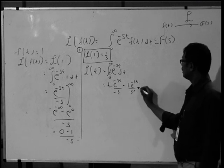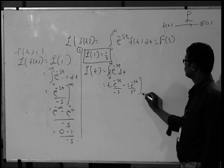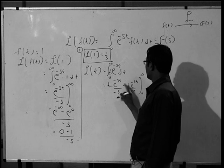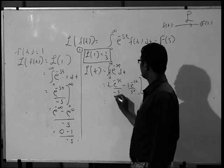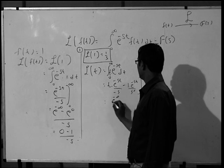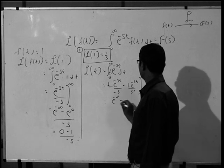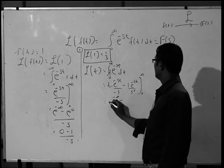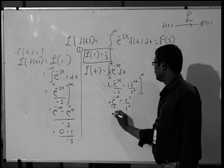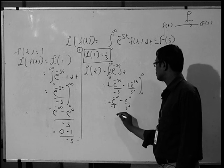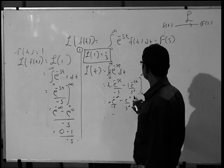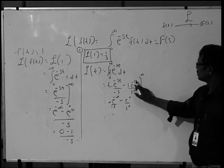That gives 1/s² for the integral term, and the derivative of 1 is 0. Applying the limit from 0 to infinity: substituting t equal to infinity gives e raised to minus infinity divided by minus s, and substituting the lower limit gives e raised to 0 by s². We again get e raised to minus infinity equal to 0.